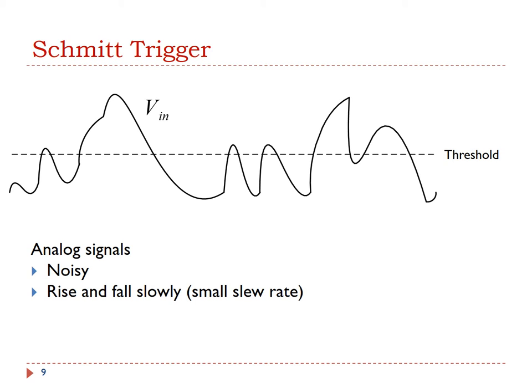Let me explain the motivations of the Schmidt trigger. In practice, an analog signal often has electronic noise introduced by various electronic components. The noise makes the signal fluctuate frequently. In addition, analog signals tend to rise or fall slowly because of inherent parasitic capacitance, resistance, or inductance in electronic circuits. Accordingly, analog signals tend to have small slew rates.